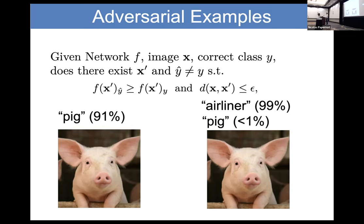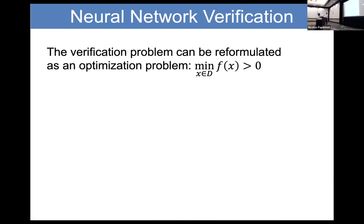That's why we need verification: if a verification method says a network is robust for a certain image, we can trust that result — it's sound. We can formulate it as a simple question: is the output of our function, which is essentially the neural network slightly modified with the last layer, positive or negative?